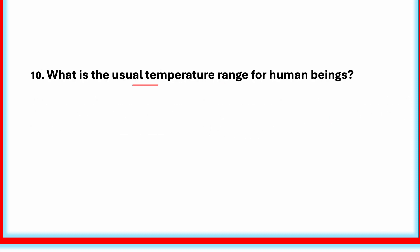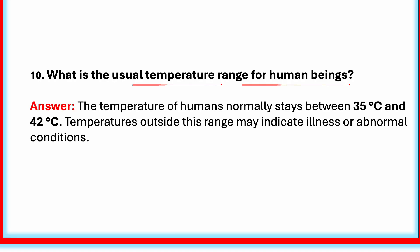What is the usual temperature range for human beings? The temperature of humans normally stays between 35 degrees Celsius and 42 degrees Celsius. Temperatures outside this range may indicate illness or abnormal conditions. If it goes below 35 degrees Celsius or above 42 degrees Celsius, the person may be unwell and needs medical help.